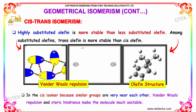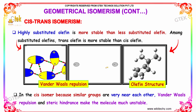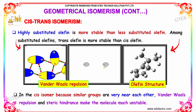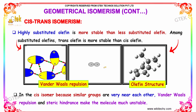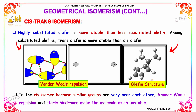A highly substituted olefin is more stable than a less substituted olefin. Among substituted olefins, the trans olefin is more stable than the cis olefin. In the cis isomer, similar groups are very close to each other, so there is van der Waals repulsion between the atoms, and the steric hindrance makes the molecule less stable.